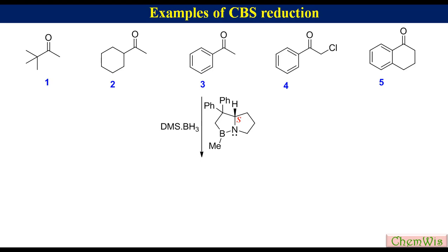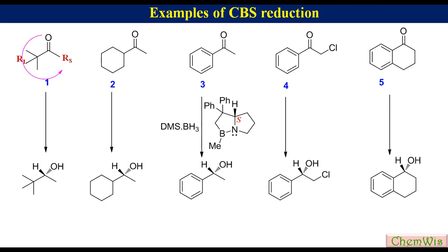Let's have ketone 1. While assigning large and small groups, the substituents at the alpha position are more important. Draw an arrow from oxygen to large group to small group. Since the direction of the arrow is anticlockwise and the configuration of CBS catalyst is S, the hydride ion will add from the top phase of the ketone, giving rise to this alcohol. Similarly, in ketones 2, 3, 4, and 5, the hydride ion will add from the top phase, giving rise to these enantiomeric alcohols as the major products.